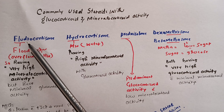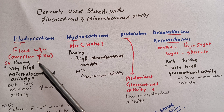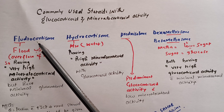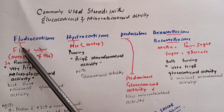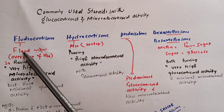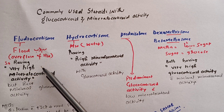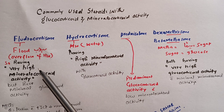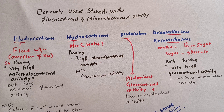Fludrocortisone has both mineralocorticoid and glucocorticoid activity. Which one is higher for fludrocortisone? If you see the 'flood' word in fludrocortisone — flood means overflow of water — which means there is more water retention. So fludrocortisone has very high mineralocorticoid activity and very low glucocorticoid activity.